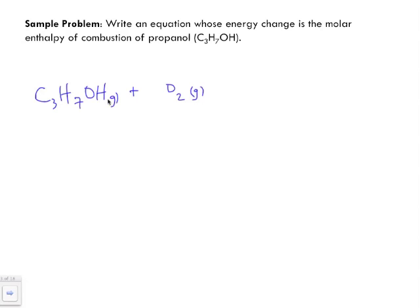So we have C3H7OH is going to burn in the presence of oxygen gas to produce CO2 gas, carbon dioxide as usual, plus water.